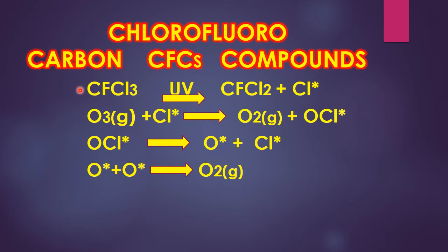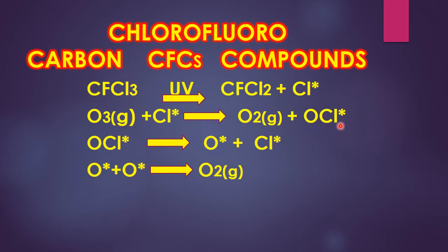Chlorofluorocarbon compounds used in refrigerators and air conditioners escape through leakage from these electrical appliances and reach the stratosphere. There, CFCs react with ultraviolet radiations, breaking the bond between carbon and chlorine, liberating a free radical of chlorine. This chlorine free radical is very reactive — it first reacts with ozone to produce a molecule of oxygen and an unstable compound ClO, which further breaks down into an oxygen atom and another free chlorine radical.